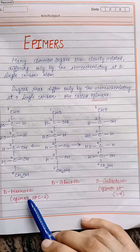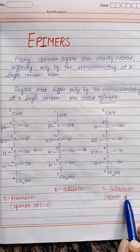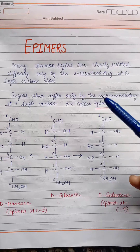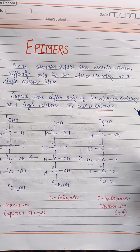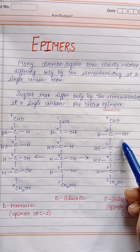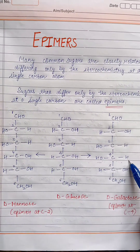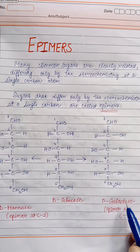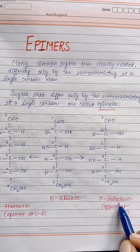But you cannot say that mannose and galactose are epimers of each other. Why? Because the configuration varies at more than one carbon — at carbon number 2 and also at carbon number 4. So these are not epimers of each other.